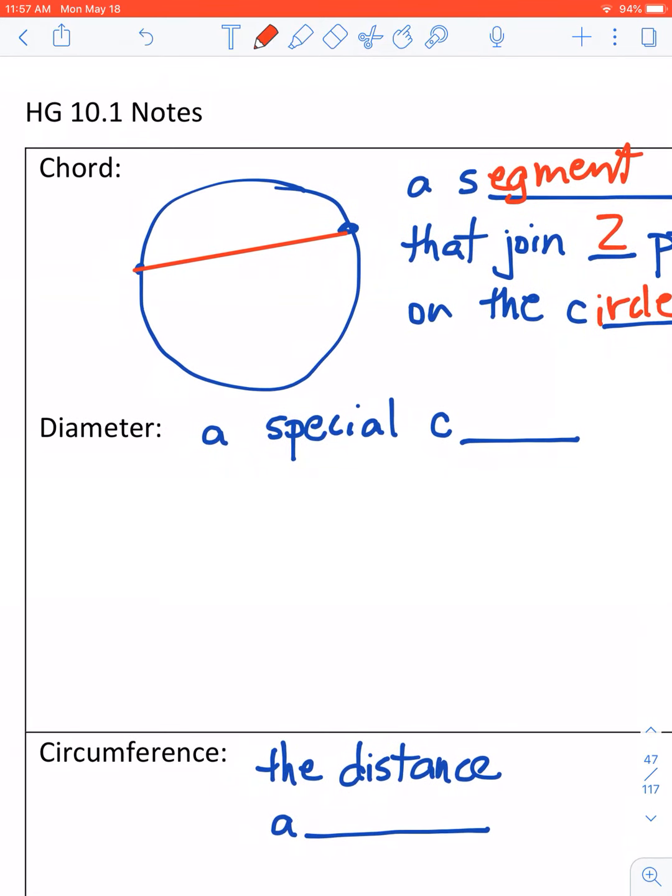Diameter. Really tricky to define, but once you have a chord down, then you can just say it's a special chord that contains the special point, known as the center. Okay, it's also known as the largest chord.